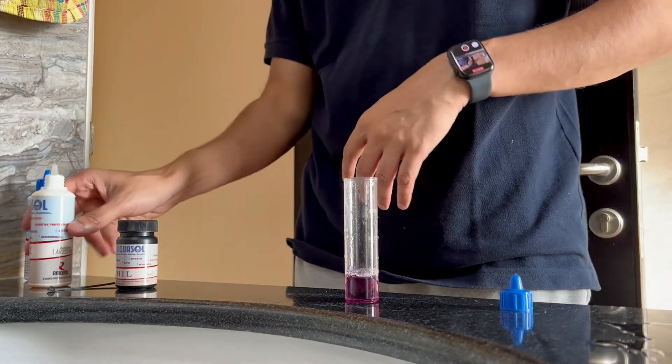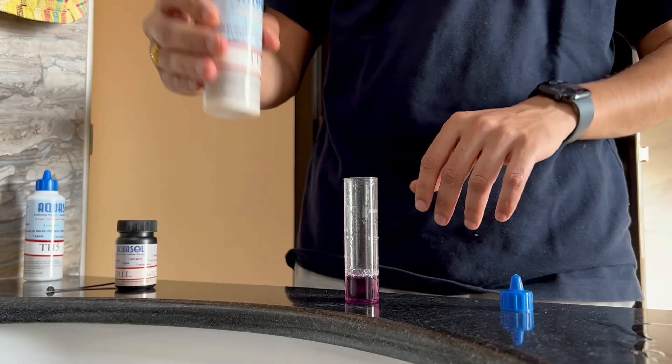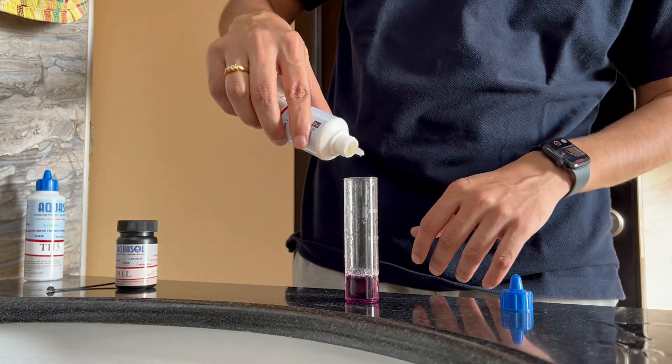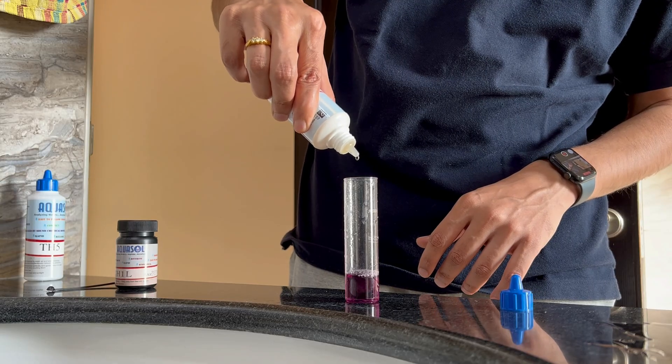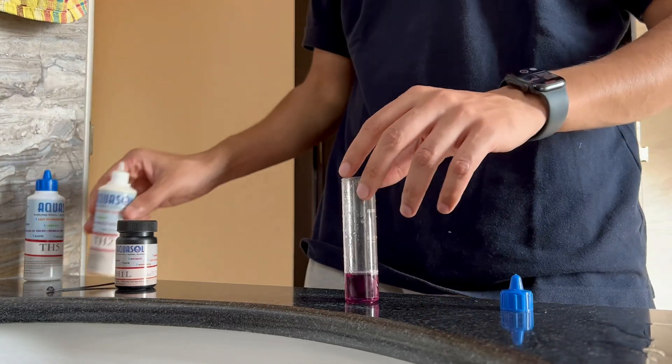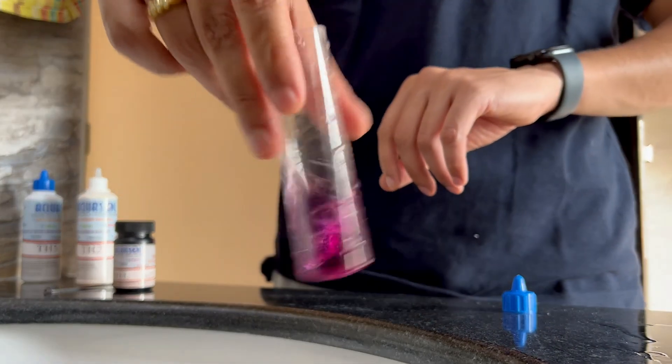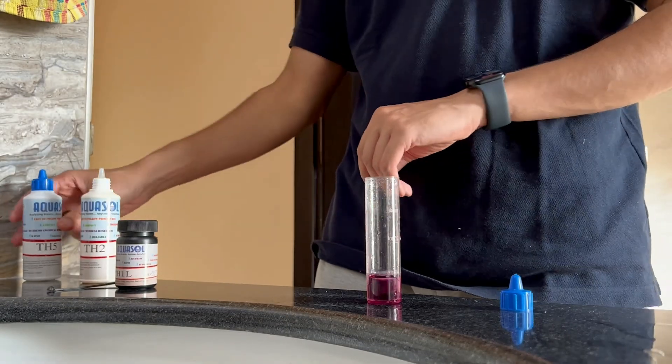Now let us move on to add TH2, 10 drops. One, two, three, four, five, six, seven, eight, nine, ten. Here we go, the water is red so basically indicates that there is hardness.